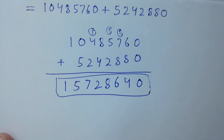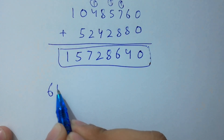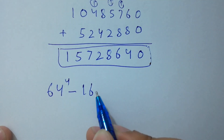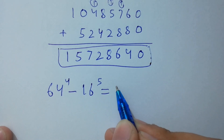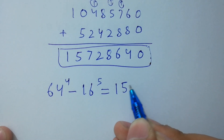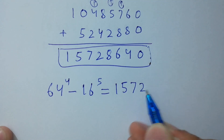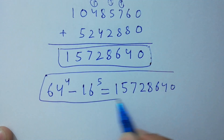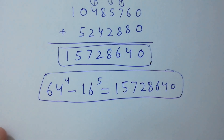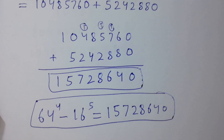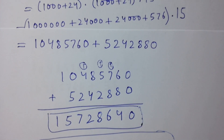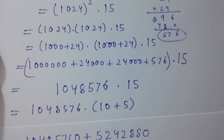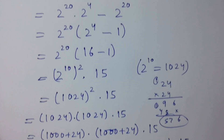So, 64 to the power 4 minus 16 to the power 5 is equal to 157,286,400, which is our final answer. Thanks for watching this video, please subscribe to this channel to get notifications of my new videos. Bye.